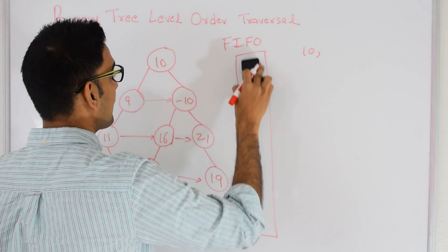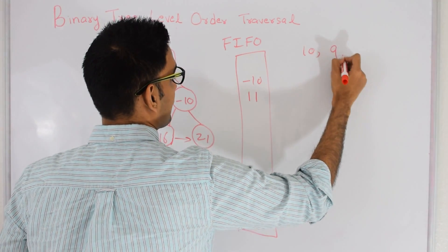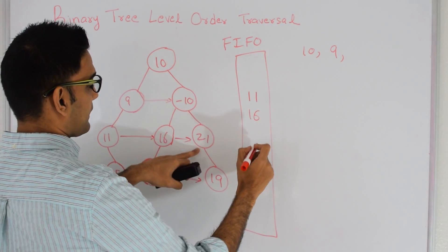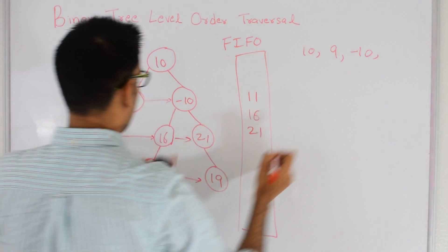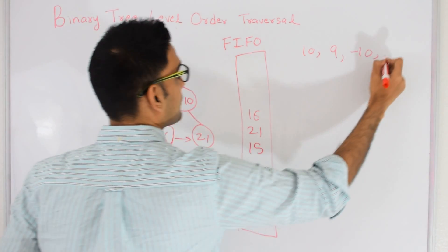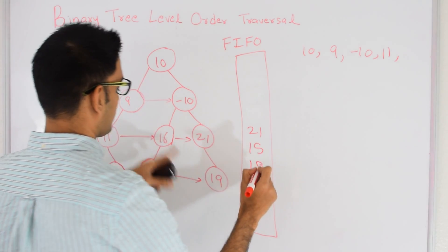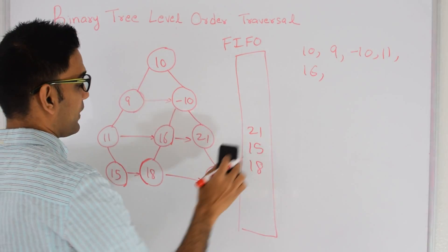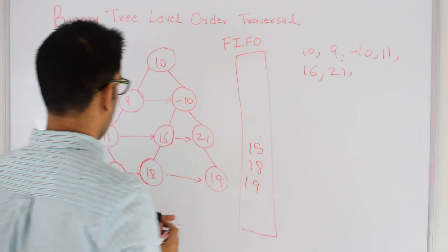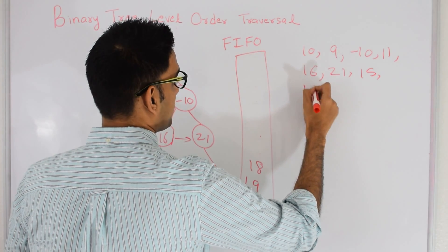Then I take out 9 from the queue. 9 doesn't have a left or right, so I print 9. Then I take out -10, it has a right 21 so I put that into the queue and print -10. Then I pick 11; it doesn't have a left but has a right so I put that in the queue and print 11. Then 16 has a left so I put that in the queue, no right, and print 16. Then 21 doesn't have a left but has a right so I put 21's right in. Then 15 doesn't have left or right so I just take it out and print it. 18 and 19 also don't have left or right so we just take them out and print.